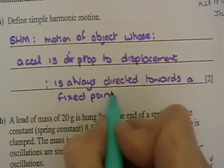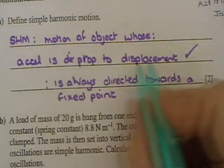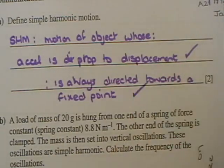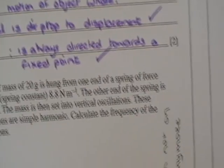So you need two bits to that, and you can see there's two marks. The acceleration directly proportional to the displacement, and always directed towards the fixed point.